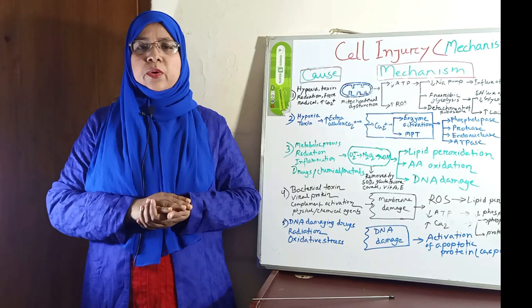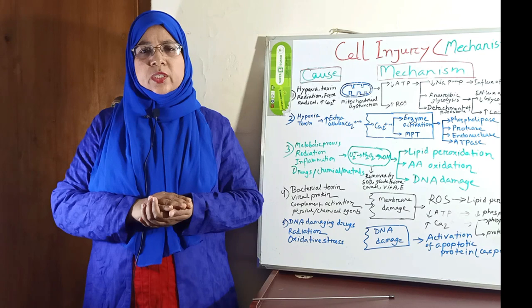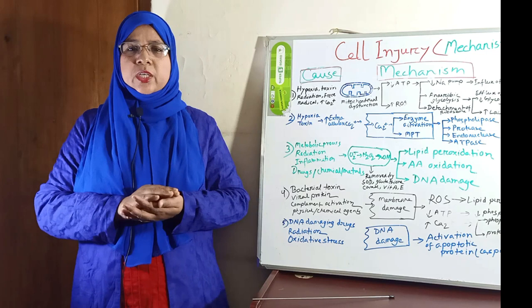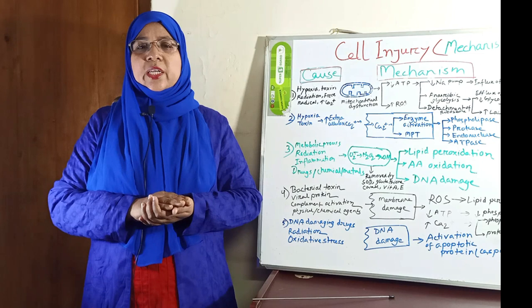Cellular adaptation means a reversible change of size, number, phenotype, and functional activities of cells in response to an adverse environment. If this adaptive capability is lost, then a sequence of events follows within cells that is known as cell injury. Today I will discuss about the type, cause, and mechanism of cell injury.